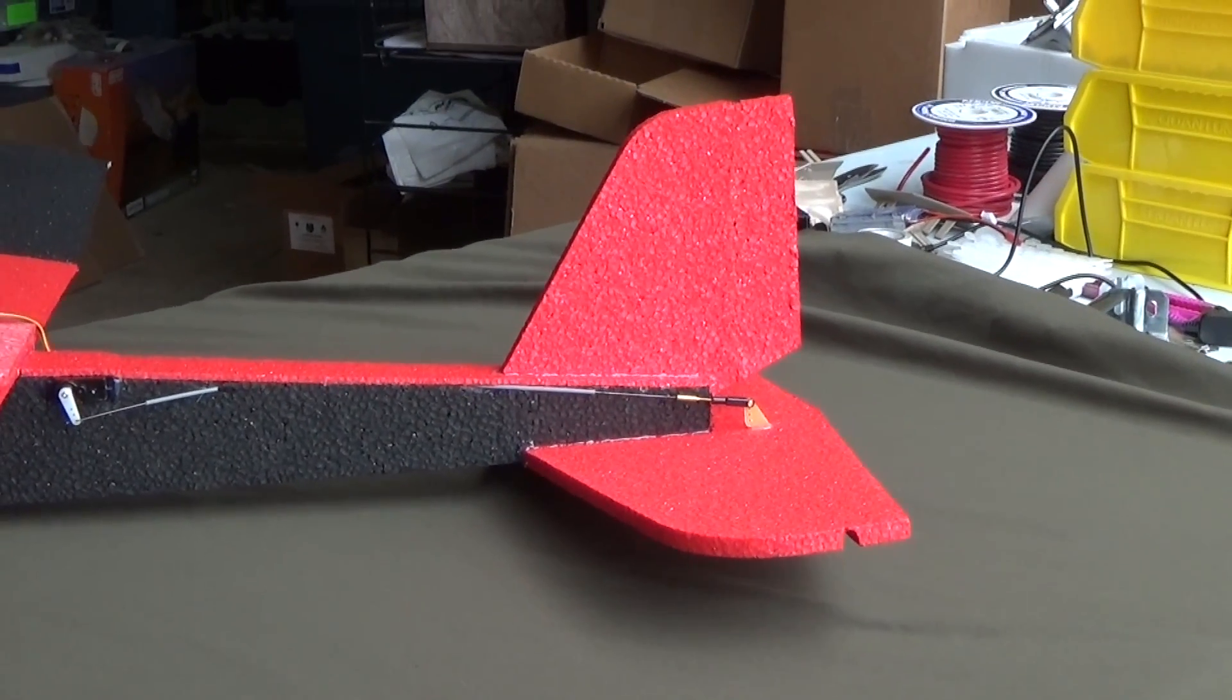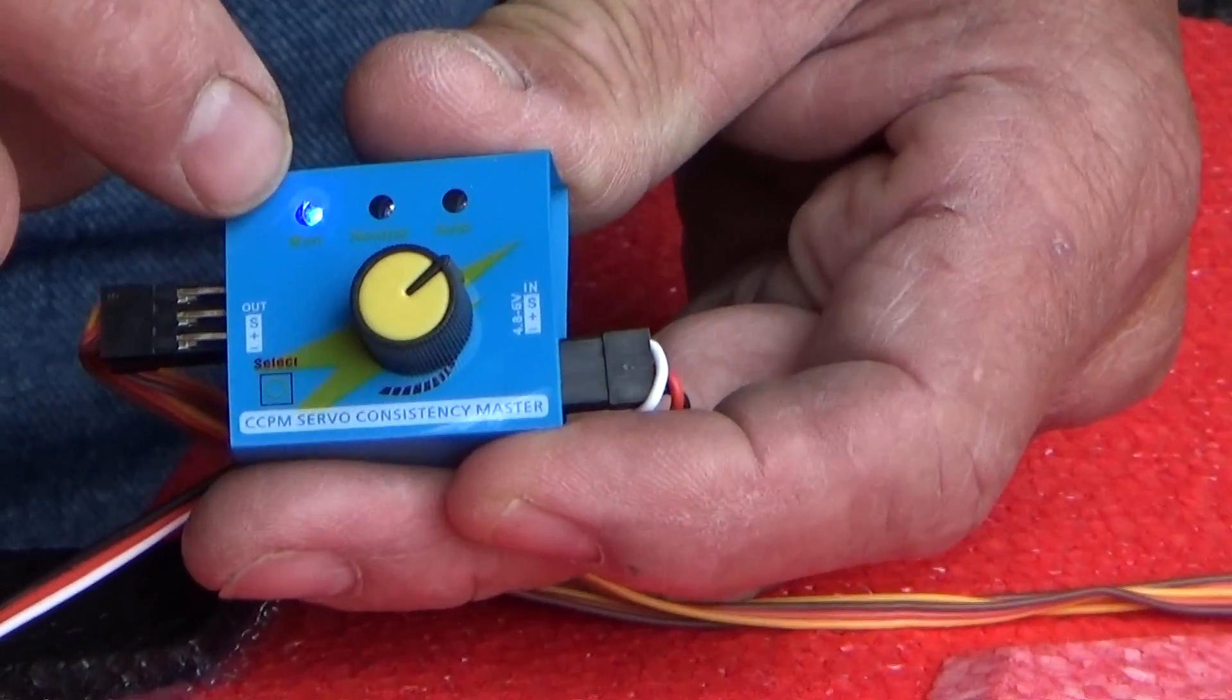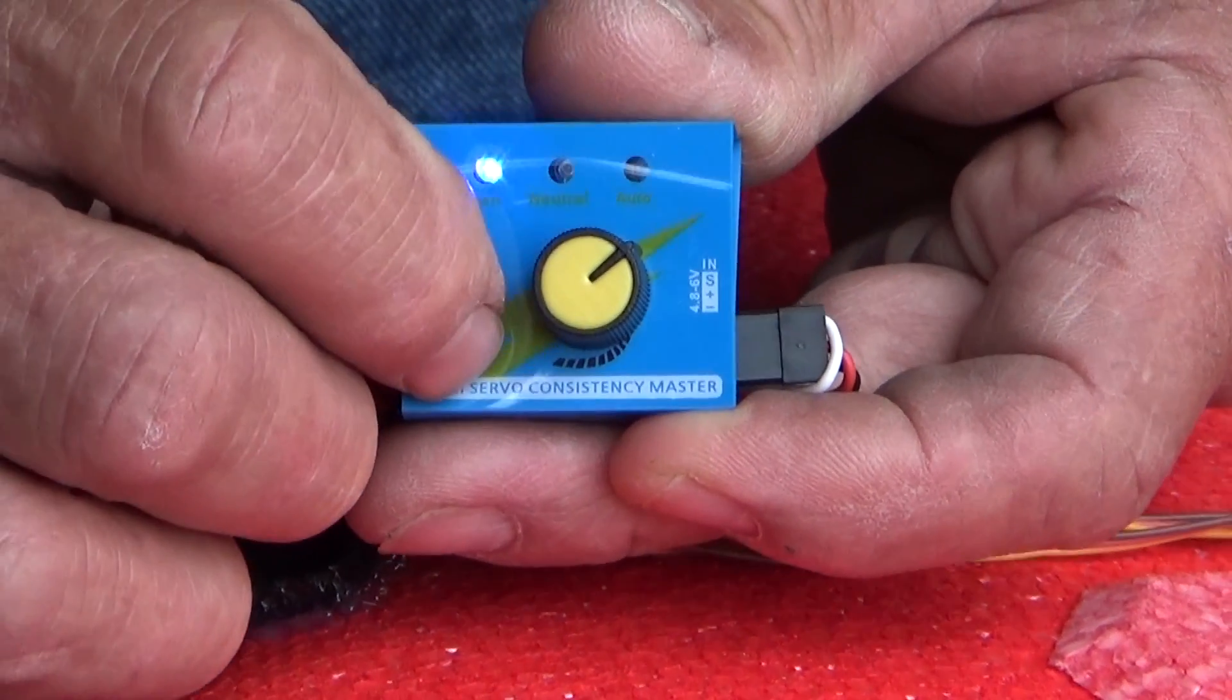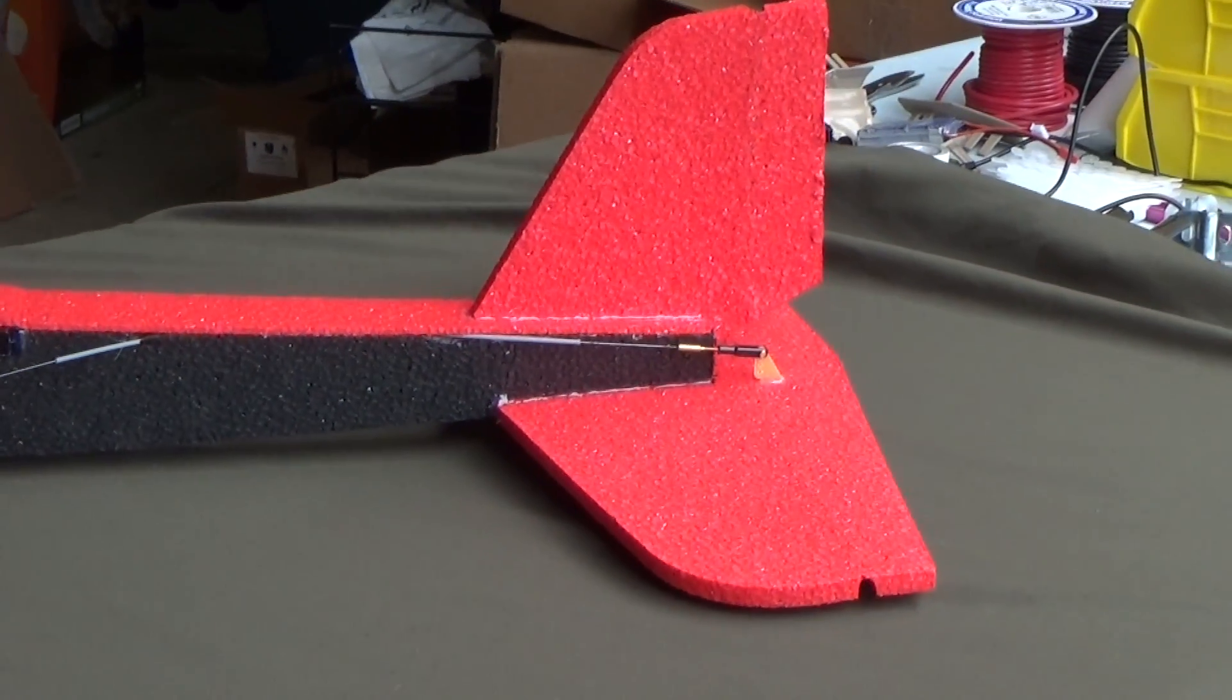Now the other thing about the servo tester, you have three different modes. Right now we're in manual mode. We're going to hit the select button and it's going to go to neutral. What that does is that sets your servo right in the center for centering.